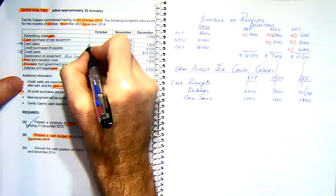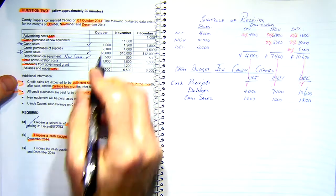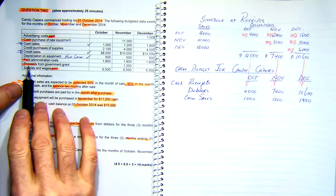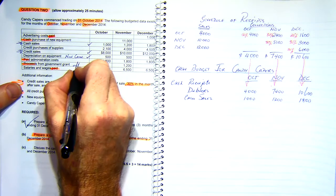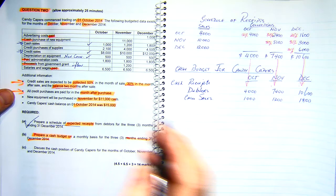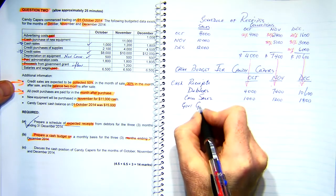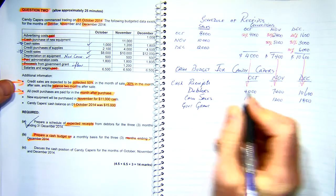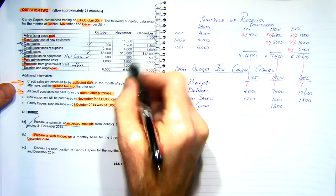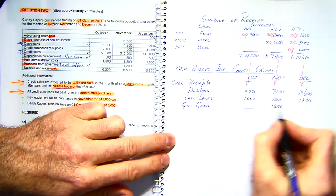I can tick off that I've done cash sales, credit sales, and the non-cash item. We've also got proceeds from a government grant — that's an inflow of $1,200 in November. So I can tick off that one. That'll be my cash receipts done.